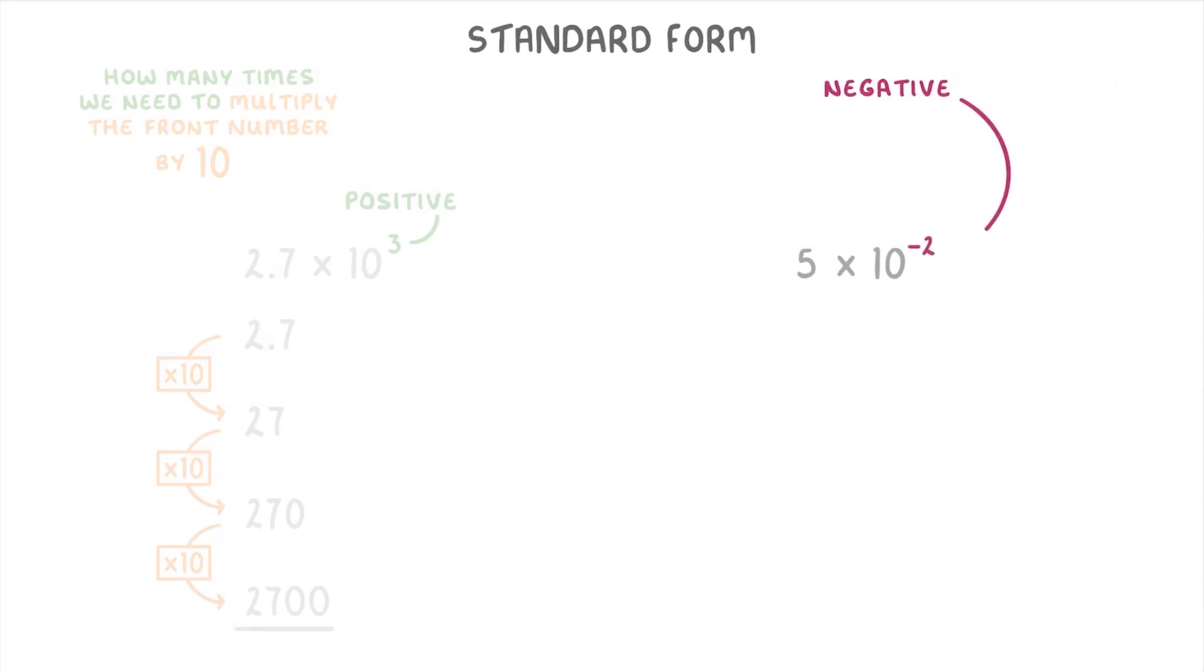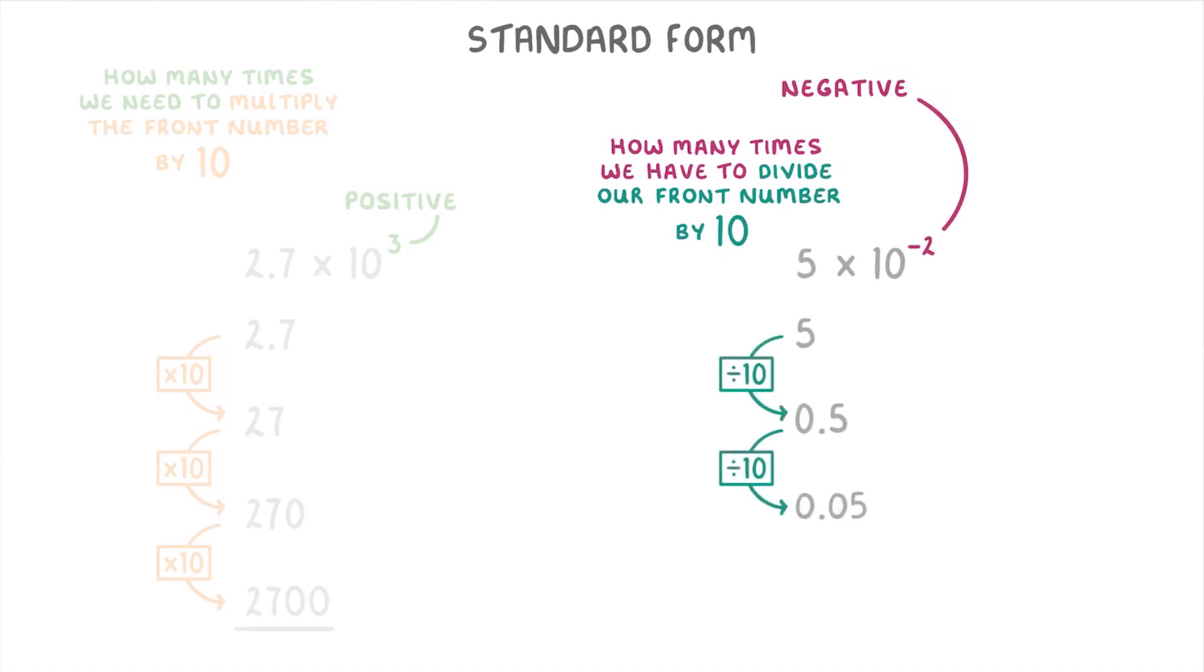Meanwhile, if the index is negative, it tells us how many times we have to divide our front number by 10. So 5 × 10^-2 is just 5 divided by 10 twice, so 0.05.